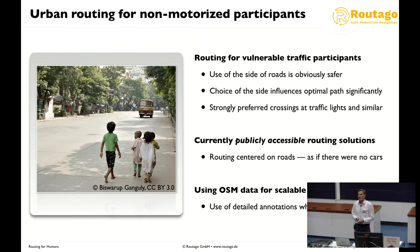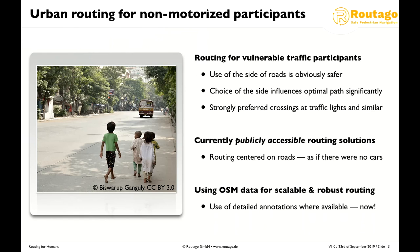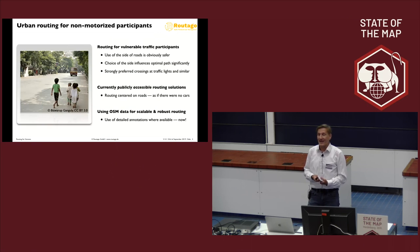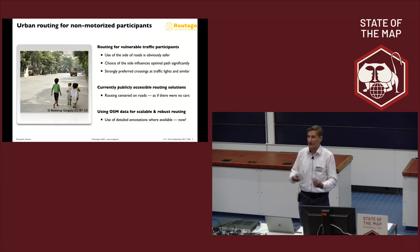We would like to use OSM data for scalable and robust routing that really uses the available annotations that are there but haven't been used well so far. OSM not only has the largest footpath network, but most footpaths are annotated with 'sidewalk=yes' or 'left' or 'right' or 'both'. As these are not separate paths, most routing solutions including GraphHopper are not using it — you have to change the route graph before you can really use it.